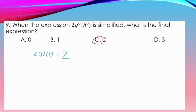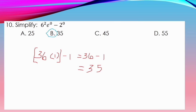For number 9: When 2g to the power of 0, quantity h to the power of 0, is simplified, the answer is 2. The 2 does not become 1 because it does not have a power of 0. So 2 times 1 (from g to the power of 0) times 1 (from h to the power of 0) equals 2. For number 10: Our answer is letter B, 35. We have 6 to the power of 2 equals 36, e to the power of 0 equals 1, minus 2 to the power of 0 which is also 1. So 36 times 1 minus 1 equals 35, following the PEMDAS rule.